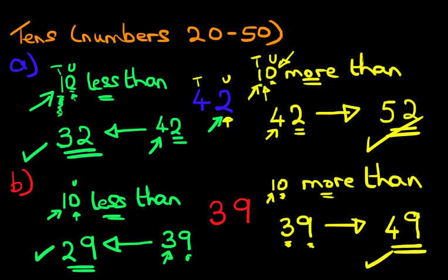So 10 more than 39, the answer is 49. 10 less than 39, the answer is 29. And it's as simple as that. And that is how we do more than and less than of tens with numbers from 20 to 50.